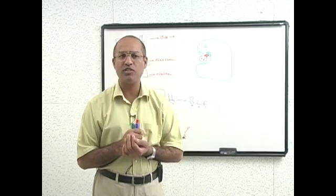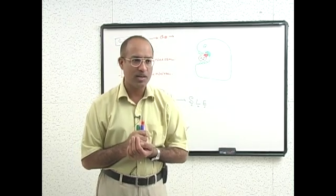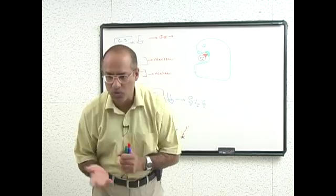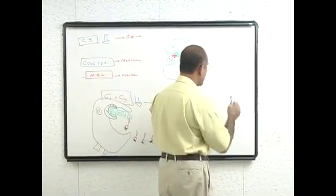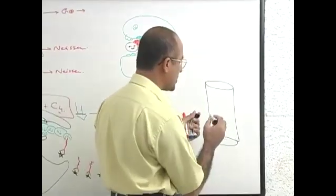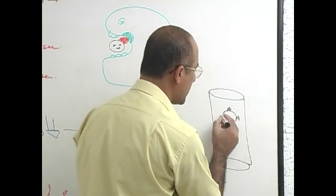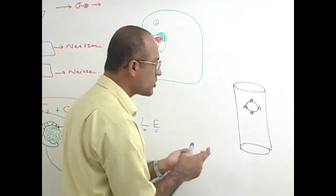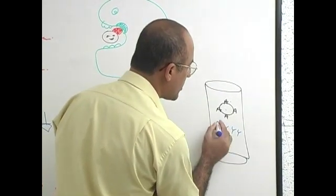Another condition in which complements are too much used is ABO incompatibility when mismatched blood is transfused. For example, my blood group is A positive. This is my circulation and my RBCs are having A antigen. If my blood group is A, my antibody will be anti-B. I should not have anti-A otherwise my antibodies will destroy my own RBCs.